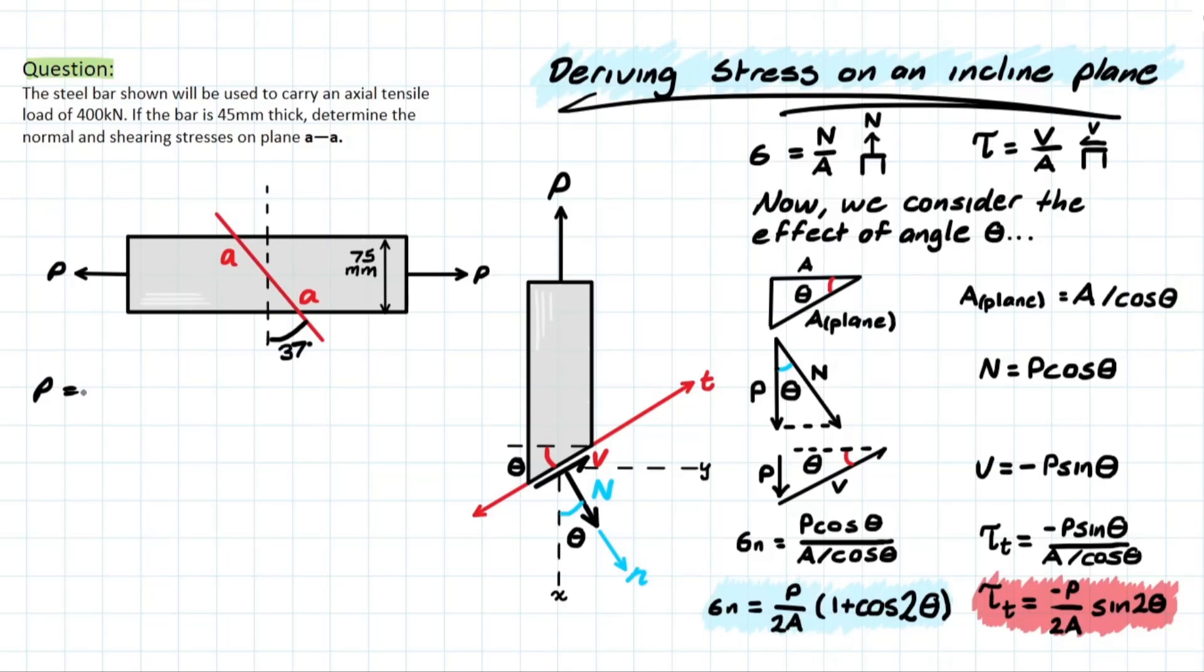We have P which is equal to 400 kilonewtons, but I'm going to take this right away and make it 400 times 10 to the 3 newtons so that we can get that newton per millimeter squared unit for megapascals in the future. We also have the A which is the cross-sectional area which is 75 millimeters times the thickness which is 45 millimeters, giving us an area of 3,375 millimeters squared.